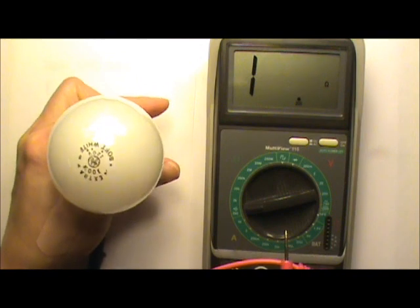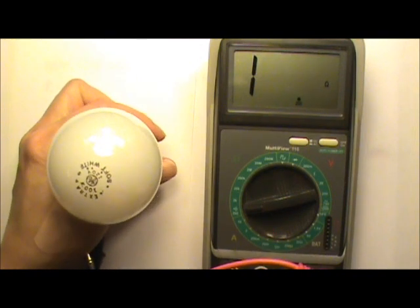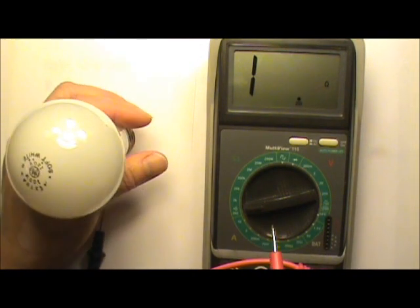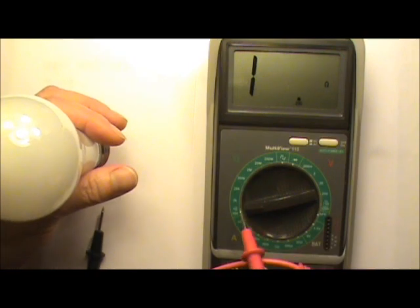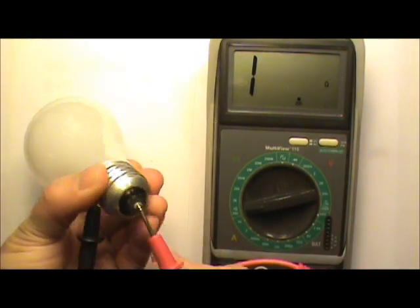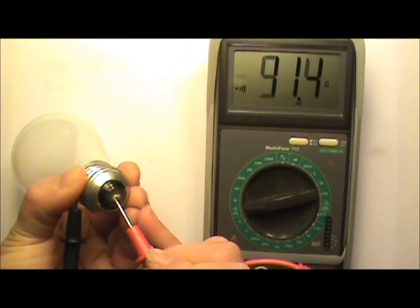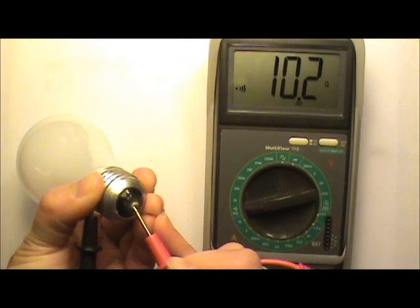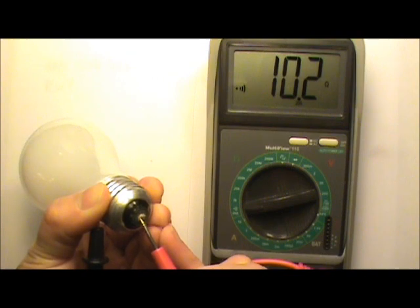I have a multimeter here I can use to measure the resistance of this light bulb. It is now at the ohms setting, and it reads a little over 10 ohms, 10.2.